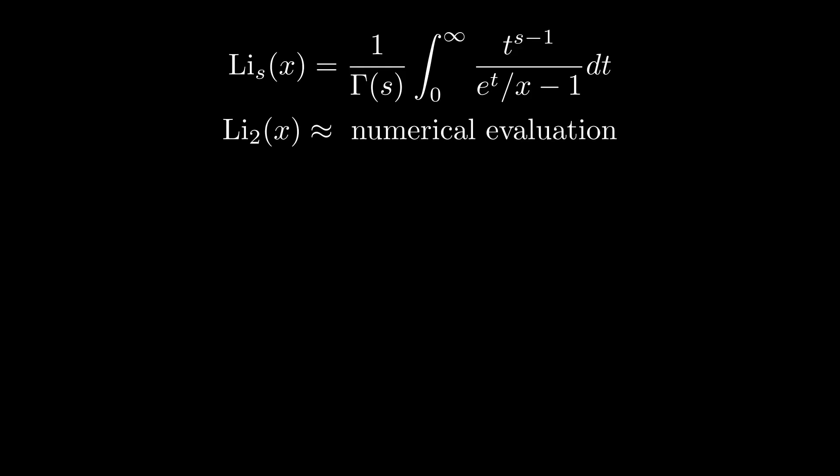Next is the polylogarithm function. Li of s of x equals 1 over the gamma function of s times the integral from 0 to infinity of t raised to the s minus 1 over e to the t over x minus 1. For s equals 2, we get a dilogarithm, which links directly to the famous constants of the Riemann zeta function. Very interesting part of math.